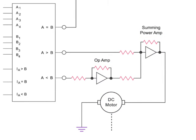For example, if the A is less than B output goes high, the op-amp inverts the plus 5-volt signal to minus 5-volts. As the minus 5-volts is applied to the summing power amp, it is amplified and inverted to positive potential.